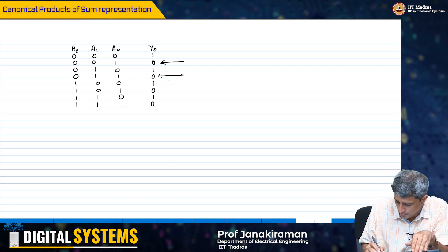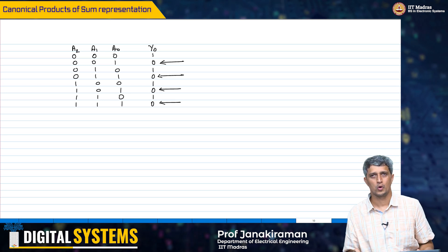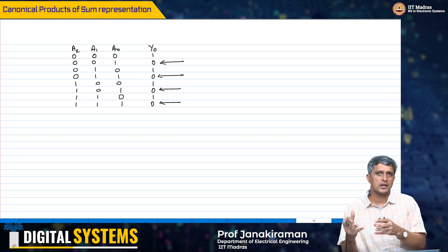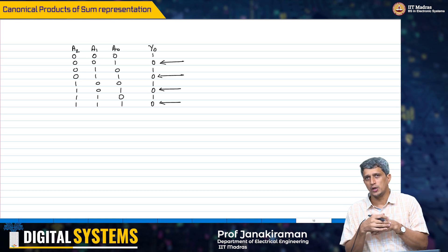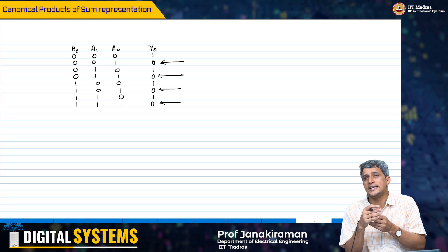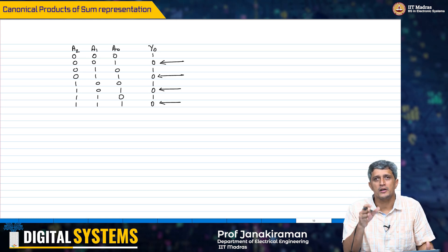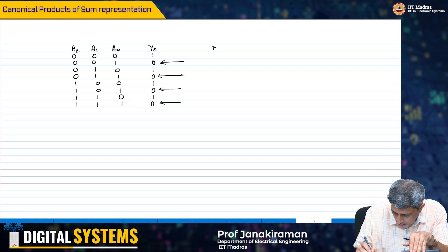There are 4 zeros in the output. Now, if I were to implement the Boolean function using these zeros, I first need to understand what I did when I implemented it using the ones. So, let us look at the meaning of these minterms.